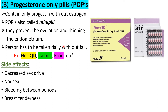What are the side effects of hormonal pills? Sex drive will be decreased, there will be a problem of nausea, bleeding between periods, and also the problem of breast tenderness.